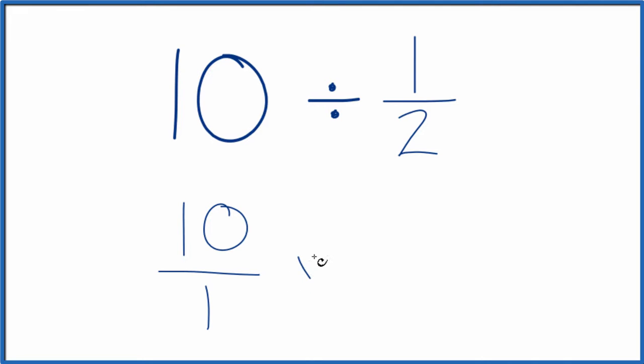Instead of division, we're going to multiply by the reciprocal of 1 half. So we take the numerator, we move that down and the denominator up. So we end up with 2 over 1. That's the reciprocal of 1 half.